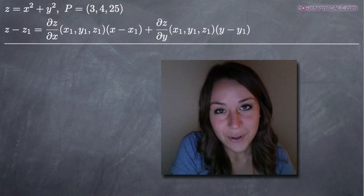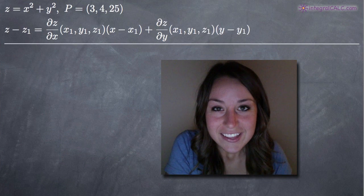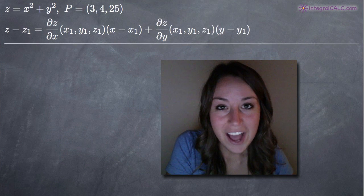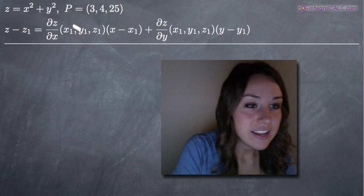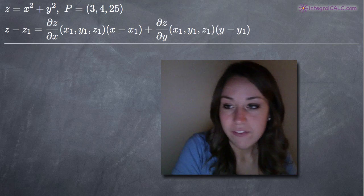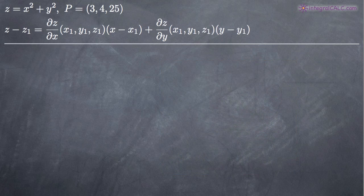Hi everyone. Welcome back to integralcalc.com. Today we're going to be talking about how to find the equation of the tangent plane. In this one, we've been given the function z equals x squared plus y squared, and we've been asked to find the tangent plane to that function at the point (3, 4, 25).